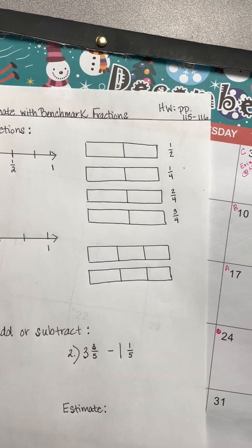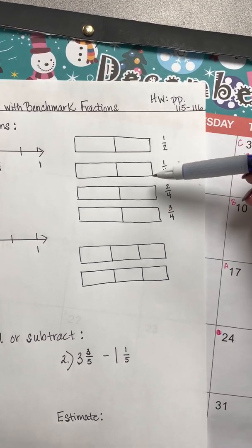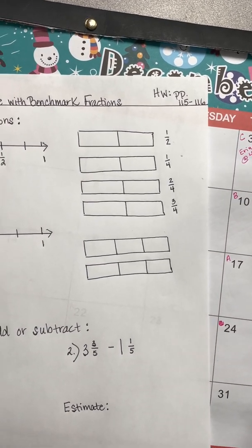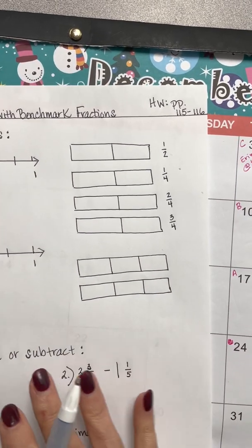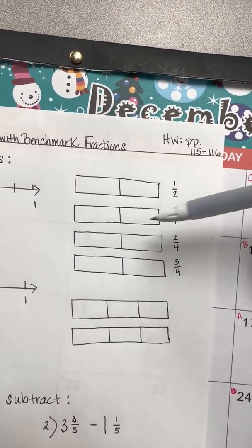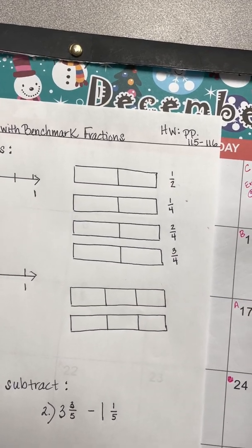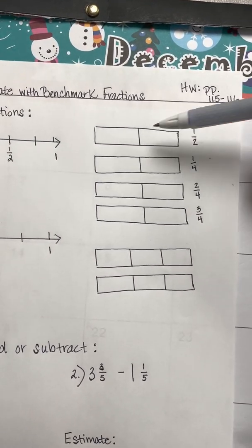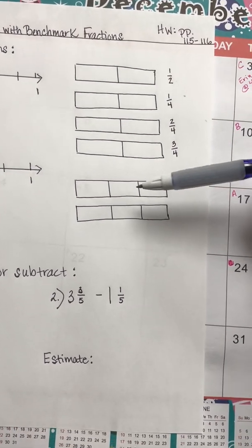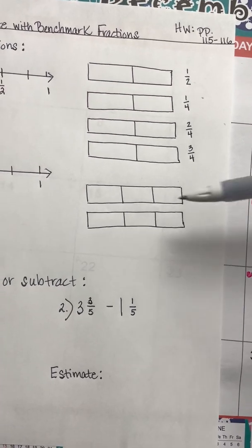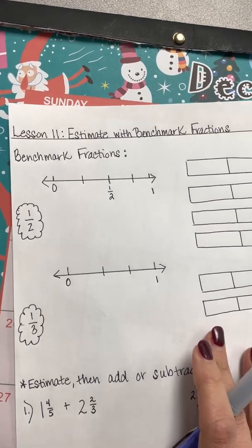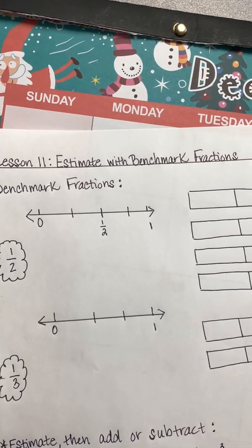I want to draw your attention to my models — they are all as close to exactly the same as I can do freehand. I didn't measure anything, I just eyeballed this. I want my rectangles as close to the same shape and size as possible. I split them all down at the one-half point, and the ones I'm going to use for thirds are already split into thirds.